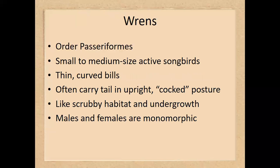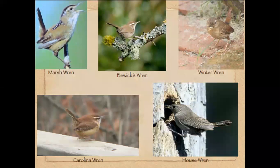Wrens are another small bird in this area. They have thin, curved beaks and usually hold their tails pointing upward when walking. Males and females look identical. The Carolina wren, house wren, or winter wren could be found in this area. The marsh wren has a song vocabulary of sometimes over 300 songs.